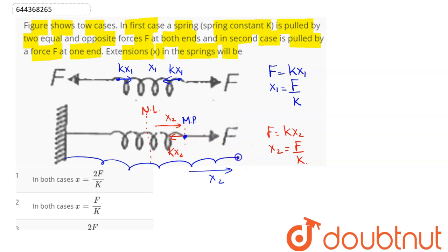Maximum extension in this case from the natural length will be equal to 2x2, which equals two times F/k. Hence maximum extension is 2F/k.